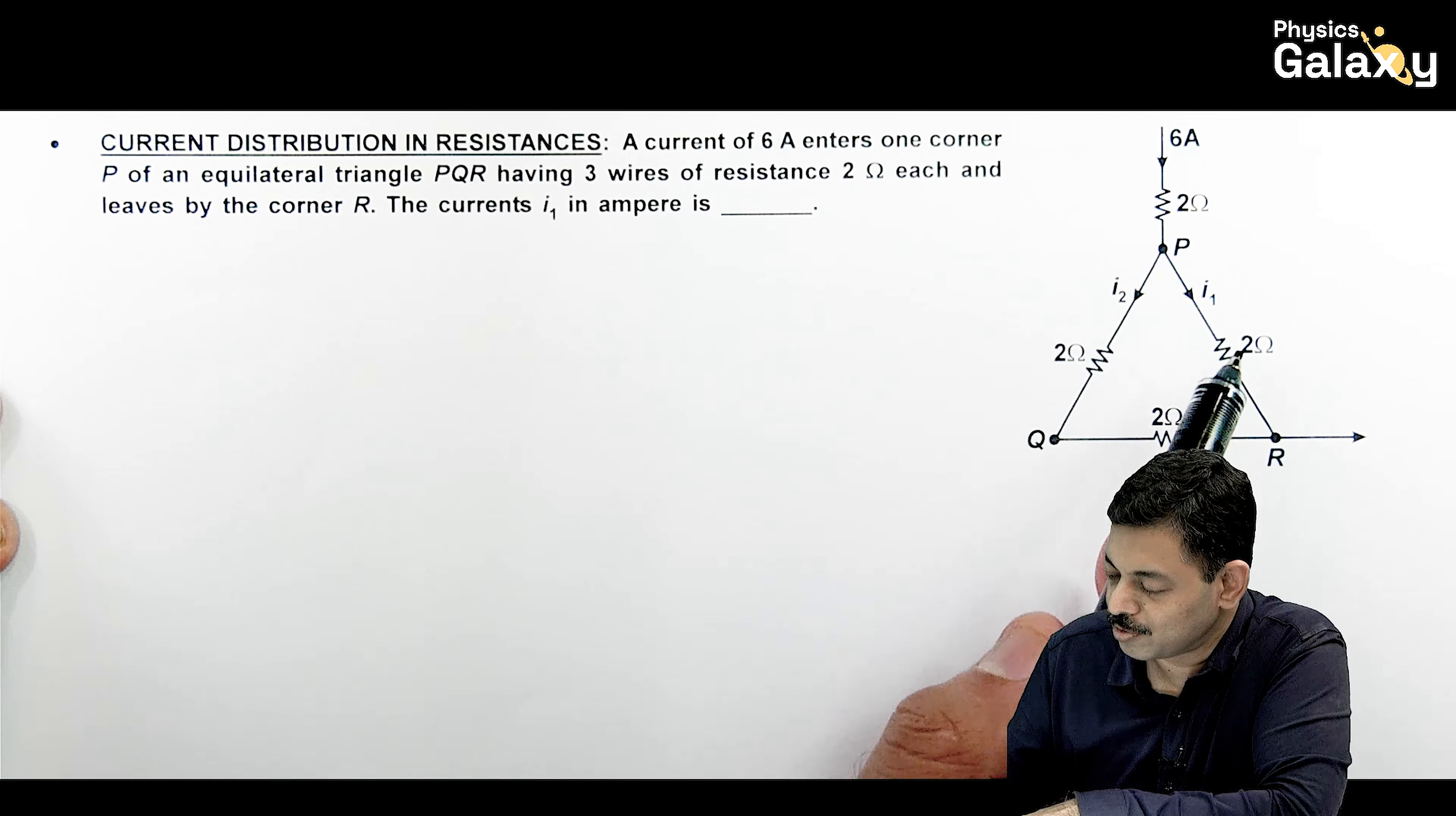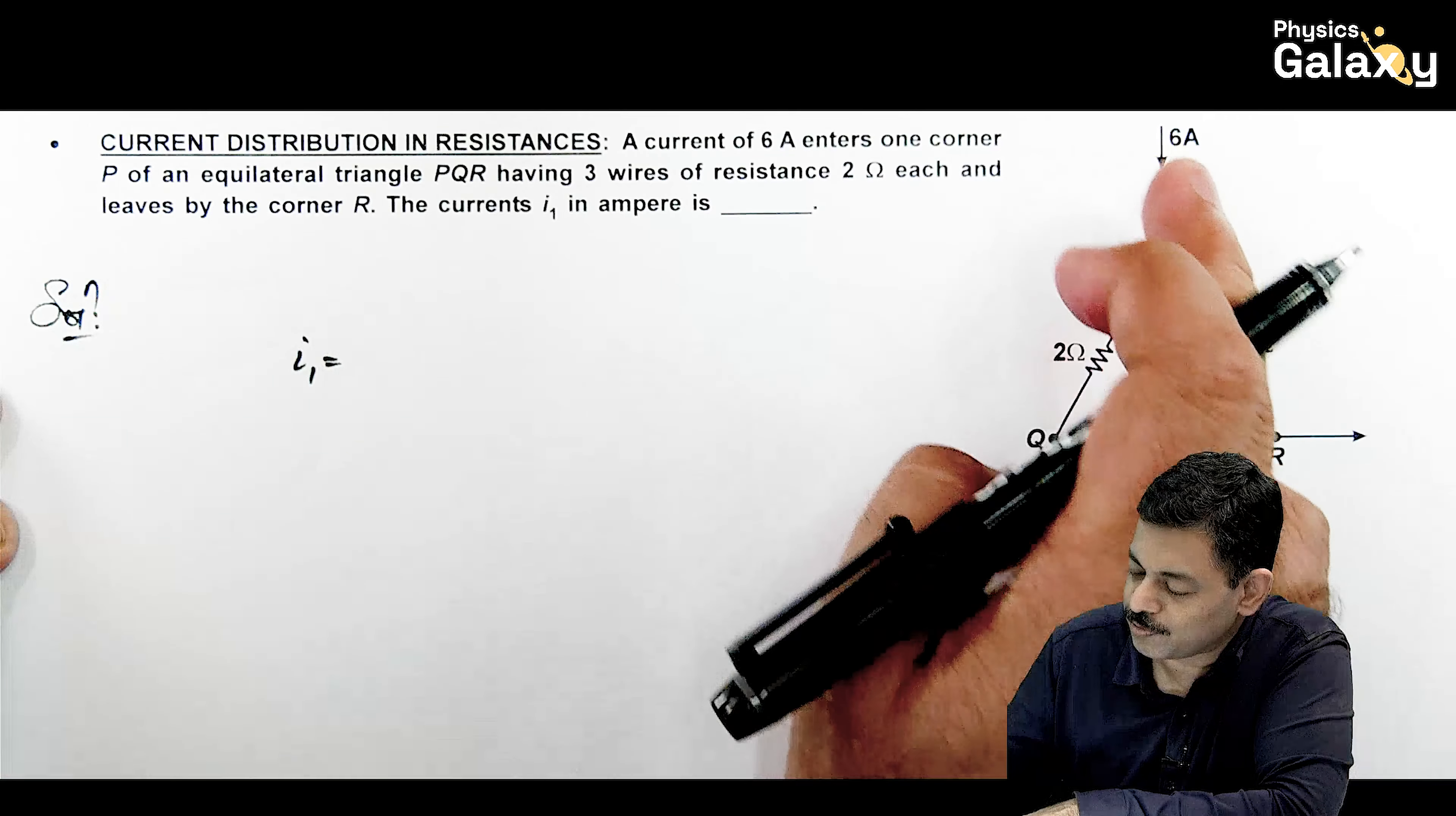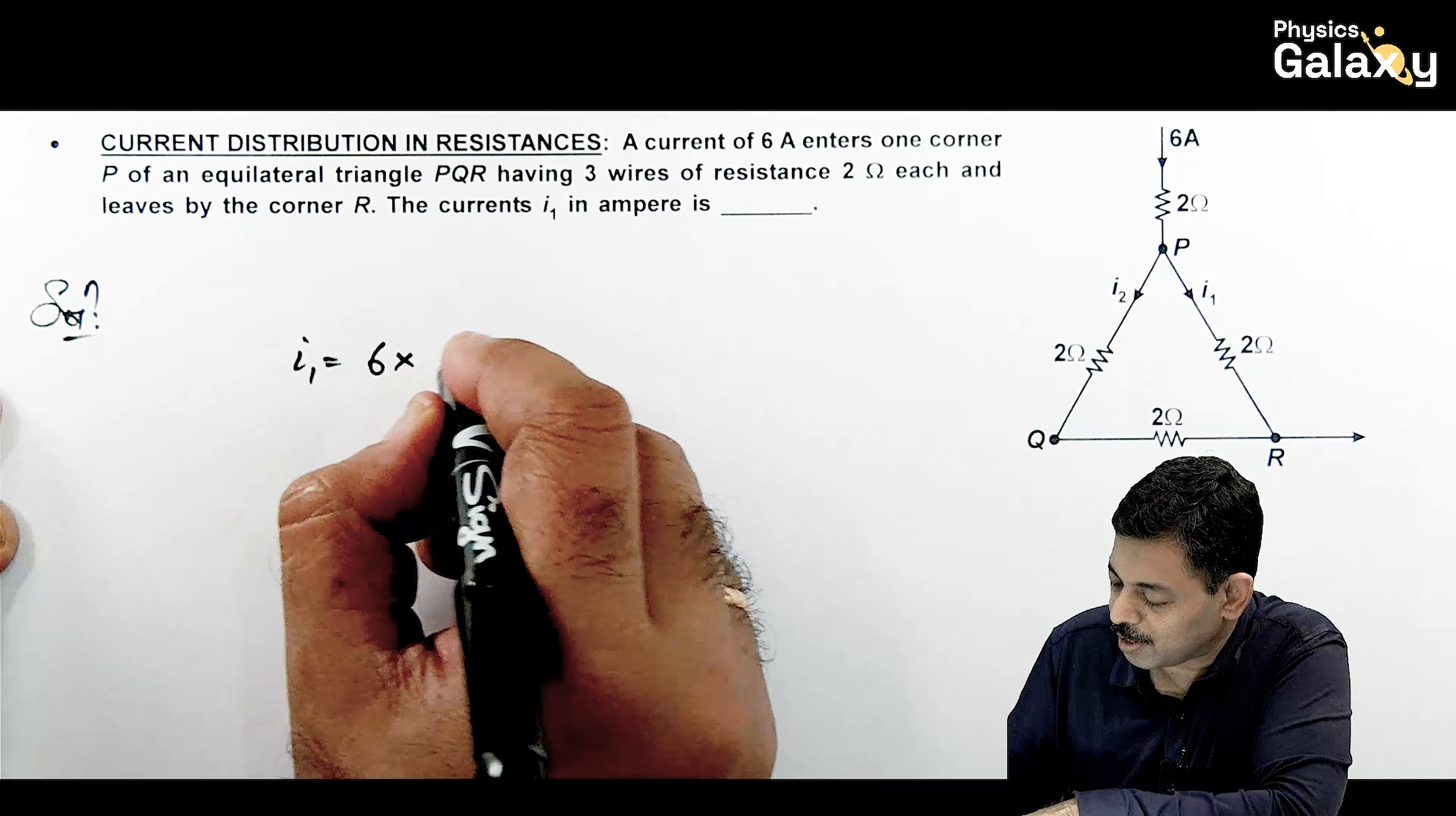If you can see, this is 6 amperes. The current divides left and right into I1 and I2, and these two resistances are connected in parallel. So in this situation, you can directly say the current here is I1. This I1 will be the distribution of 6 amperes in this 2 and 4 ohm resistance.